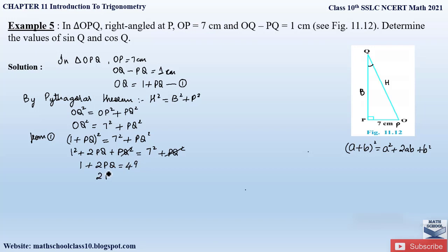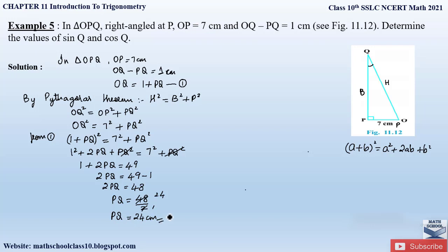Sending 1 to the right-hand side: 2PQ equals 49 minus 1, which is 48, so PQ equals 48 divided by 2, therefore PQ equals 24 centimeters. Now we know the value of PQ. Substituting into equation 1: OQ equals 1 plus PQ equals 1 plus 24, therefore OQ equals 25 centimeters. Now we know all three sides: OQ is 25 (hypotenuse), PQ is 24, and OP is 7 centimeters.